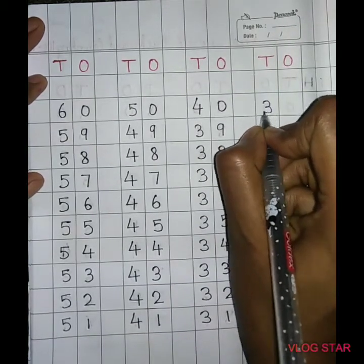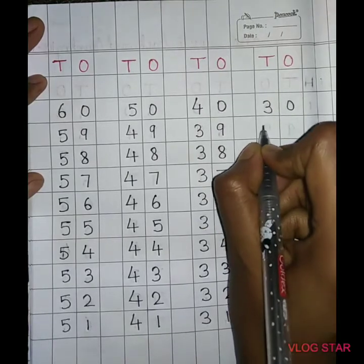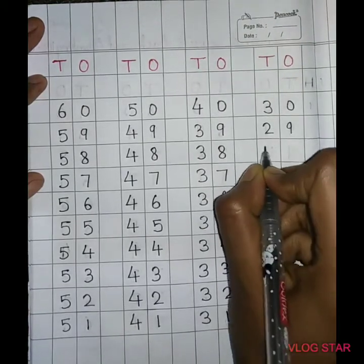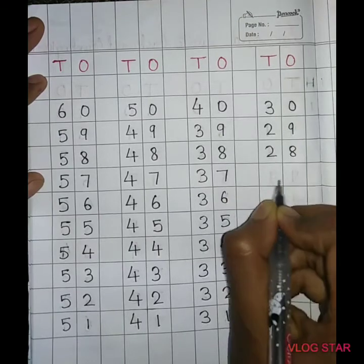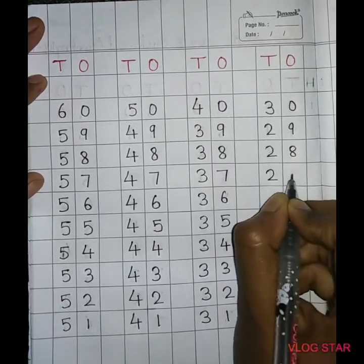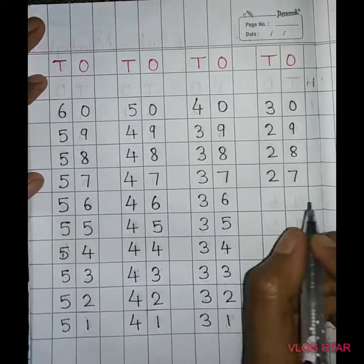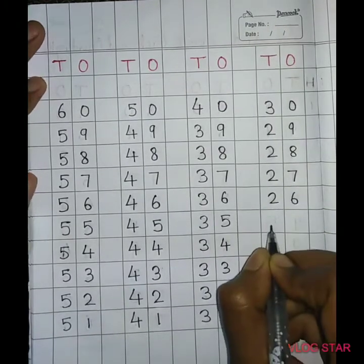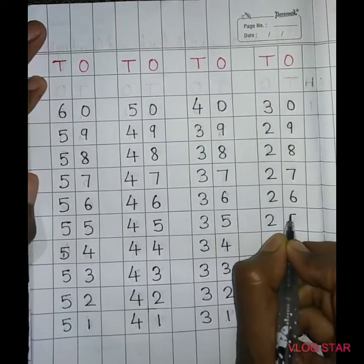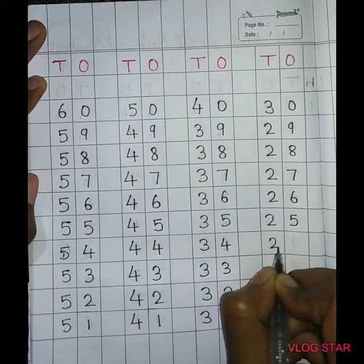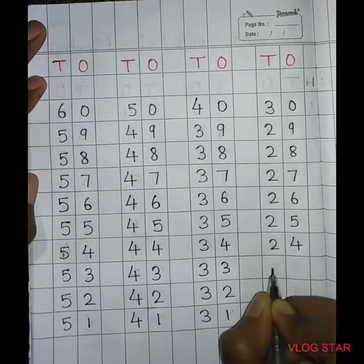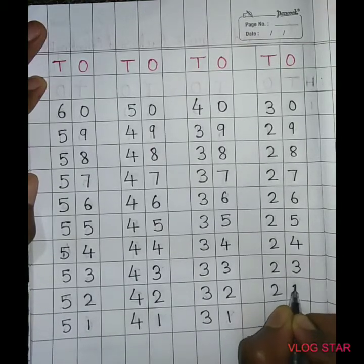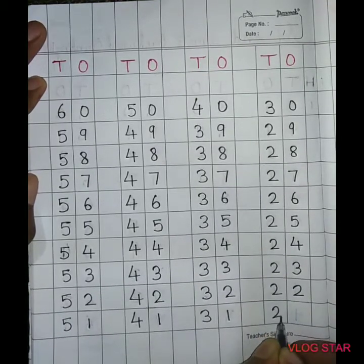31, 30, 29, 28, 27, 26, 25, 24, 23, 22, 21.